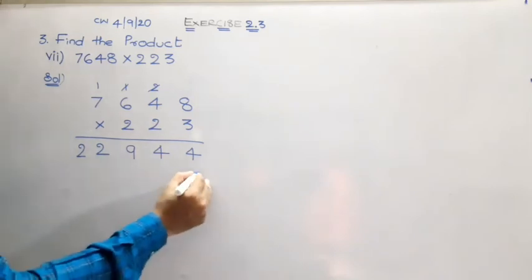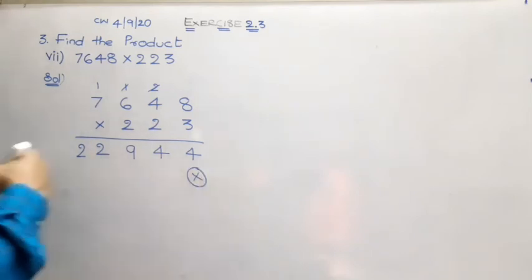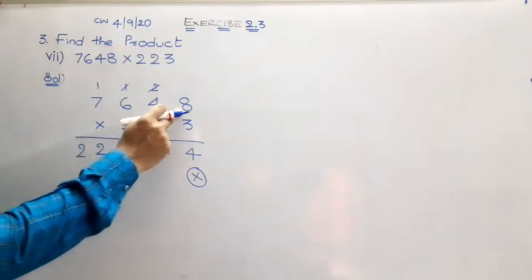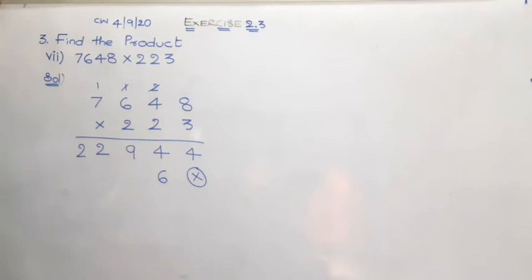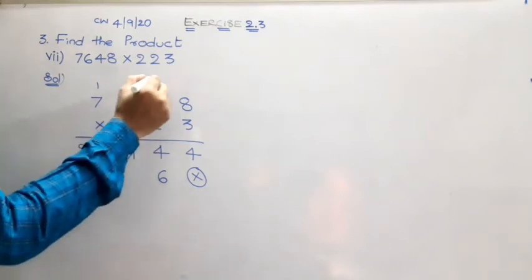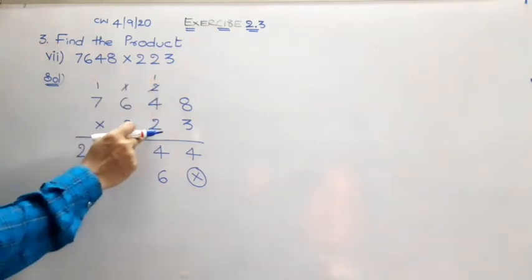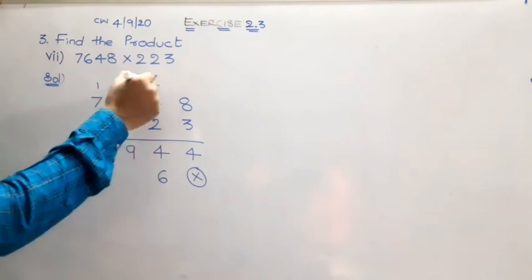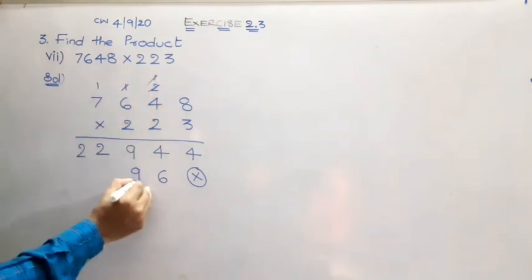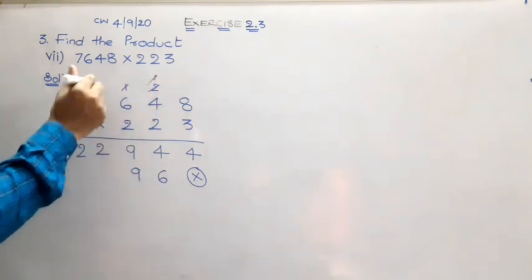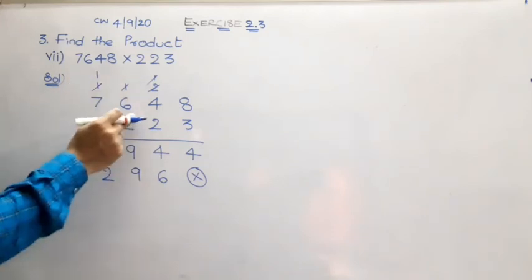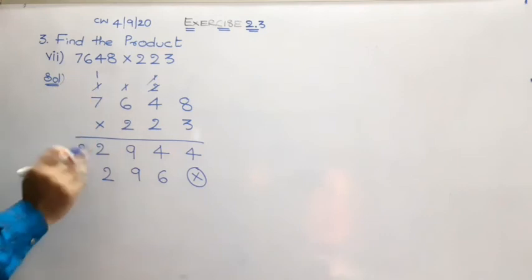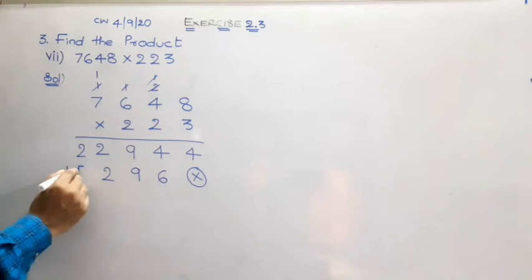For the next number, we have to leave one place value. 2 times 8 are 16. So that extra one. 2 times 4 are 8. 8 plus 1 gives us 9. 2 times 6 are 12. 2 times 7 are 14. 14 plus 1 gives us 15.